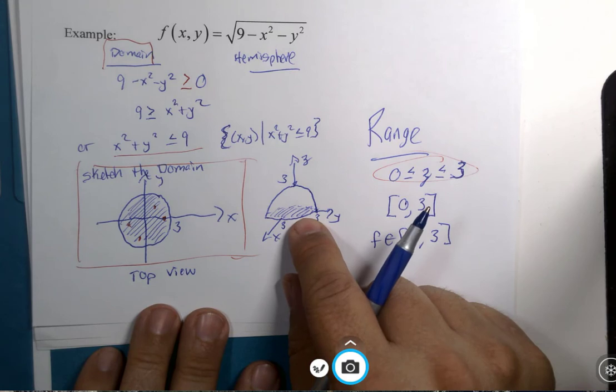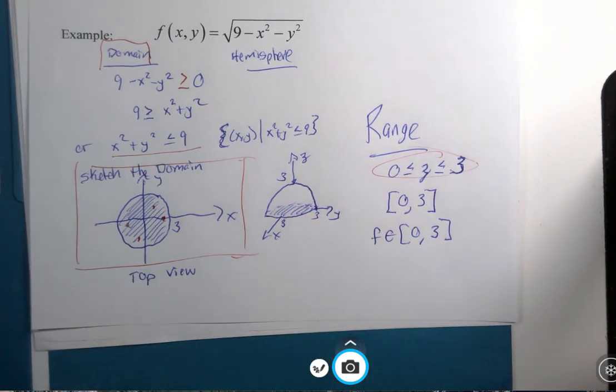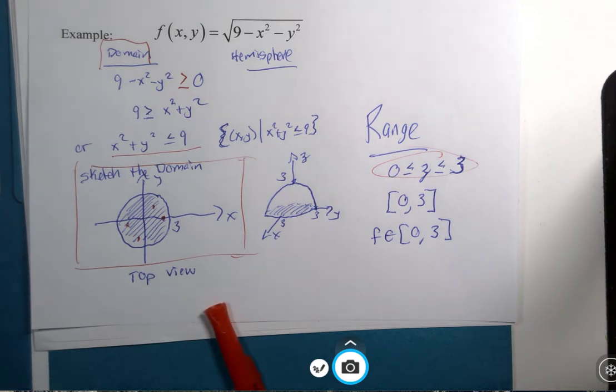Now, this particular range was doable because we had some sense of the graph in advance. If you stay tuned to what's coming in the next segment, we'll look at range for some problems where maybe we don't always know what the three-dimensional graph looks like. See you then.